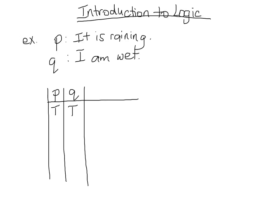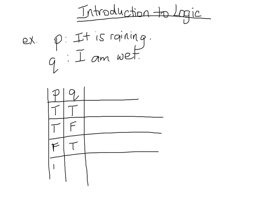In our truth table we'll have both true, then the first one true and the second one false, then false and true, and finally both false. This is every combination of whether or not two statements can be true or false.